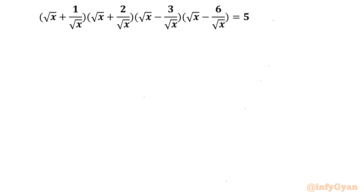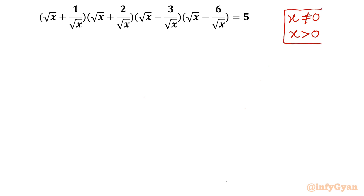Let us get started by writing the domain of the equation. As you can see, x is in the denominator, so x cannot be 0. Also, because of the square root, x must be positive for real-valued solutions. So we will keep this restriction in mind as we proceed.